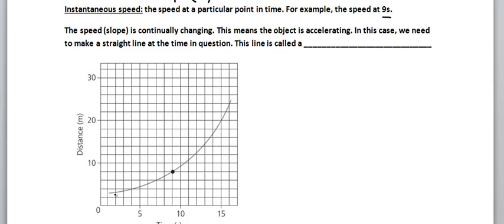So here's a graph where you can see it's not a straight line. The slope is continually changing, and that means the speed is continually changing. And this means the object is accelerating.